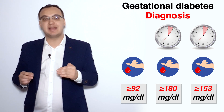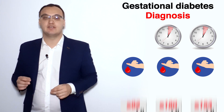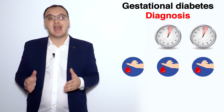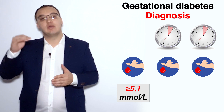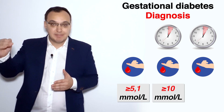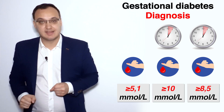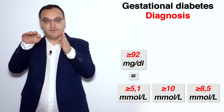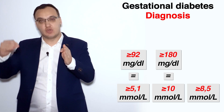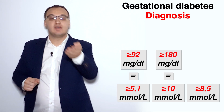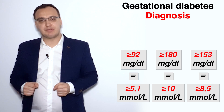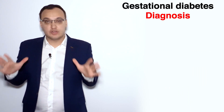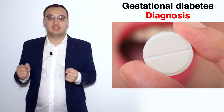We can also express these values in millimoles per liter, which many European countries use. The equivalent cutoff values are: fasting more than 5.1 mmol/L, one-hour more than 10 mmol/L, and two-hour more than 8.5 mmol/L. So 92 mg/dL equals 5.1 mmol/L, 180 mg/dL equals 10 mmol/L, and 153 mg/dL equals 8.5 mmol/L.